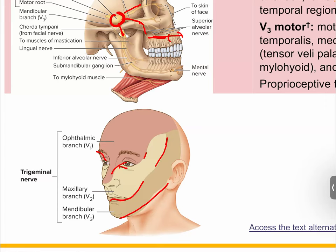Depending on where you inject, you get different amounts of numbness. If it's up front you'll have small regional numbness; if it's in the back it'll numb everything all the way up, often backing up into your cheekbone and upper face. If you're doing dental work on your mandible, you go after the mandibular branch. When you get numbed on your upper maxillary molars, it feels like your entire face is numb — your eyes are kind of falling out of the socket. That's because you can feel the extent of the maxillary branch.